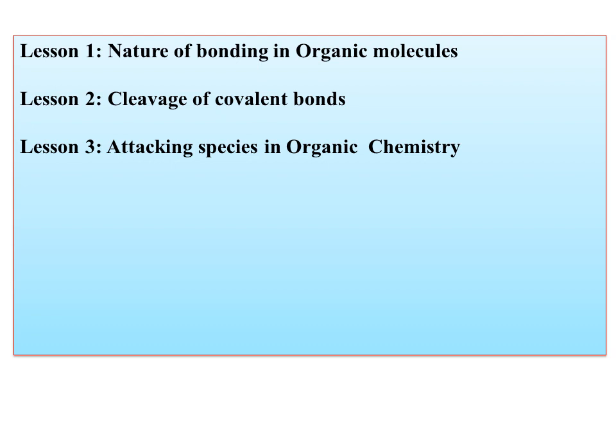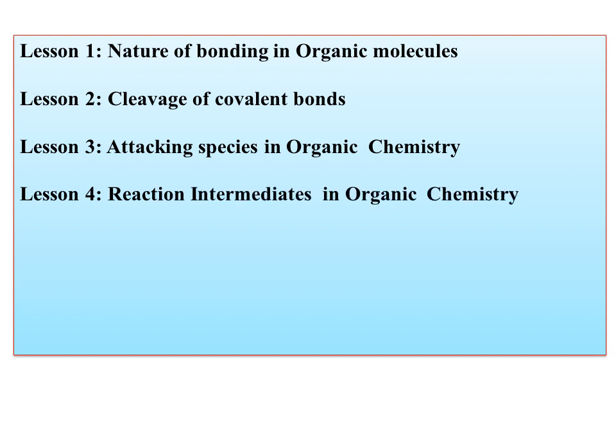Once the cleavage takes place, the attacking species — it may be electron rich or it may be electron deficient — should attack the neutral molecule, thereby the reaction takes place. Those species which are going to attack are called attacking species, and you are going to learn the different types of attacking species in lesson number three. Once the attack takes place, intermediates are formed which are highly reactive in nature and have a very short lifespan. Those reactive intermediates are highly unstable and immediately get converted into product.